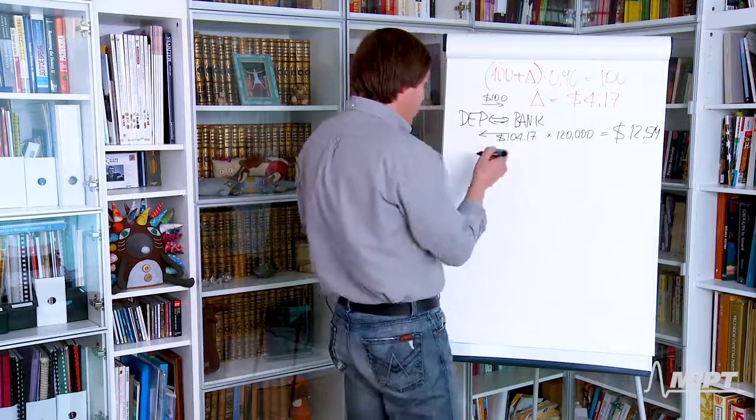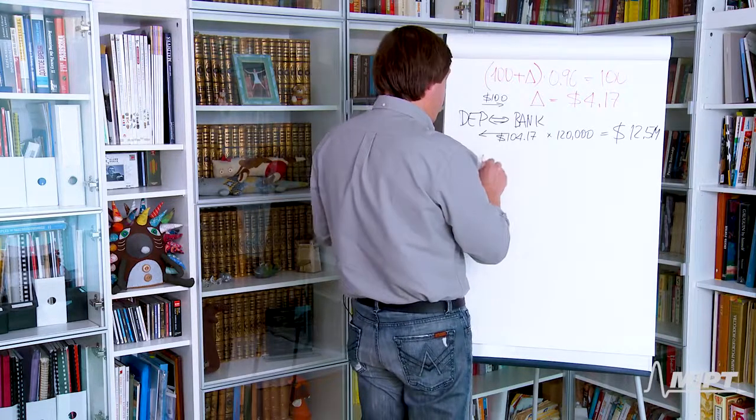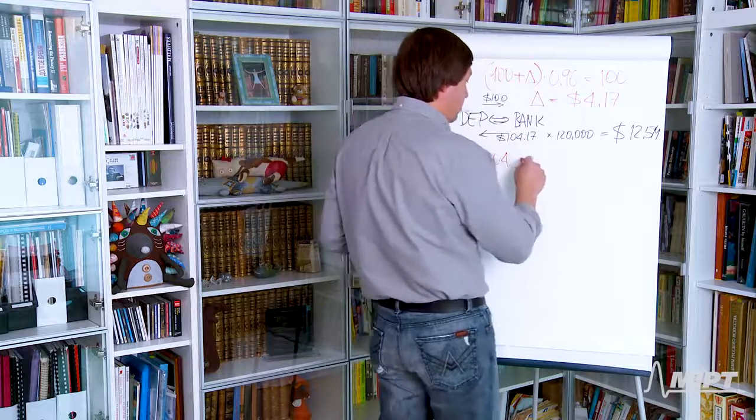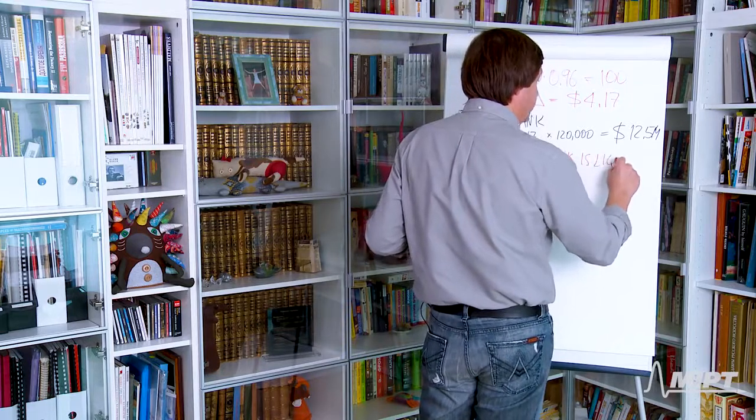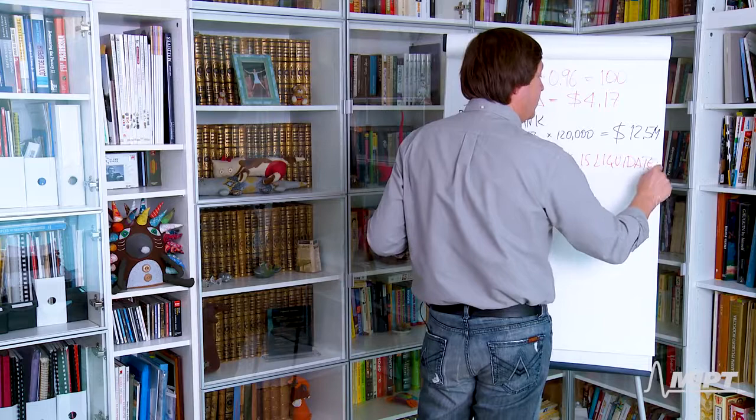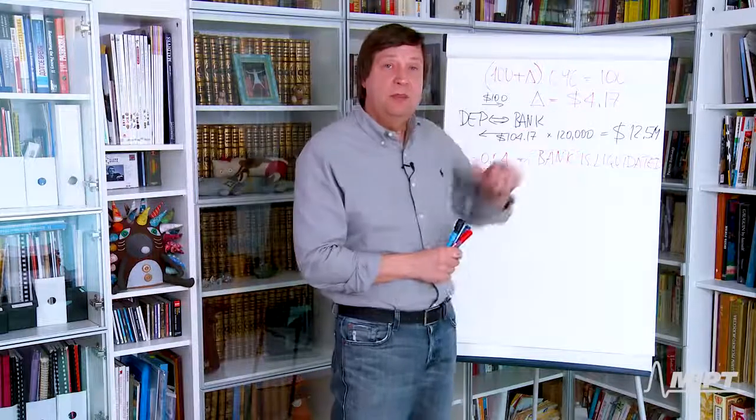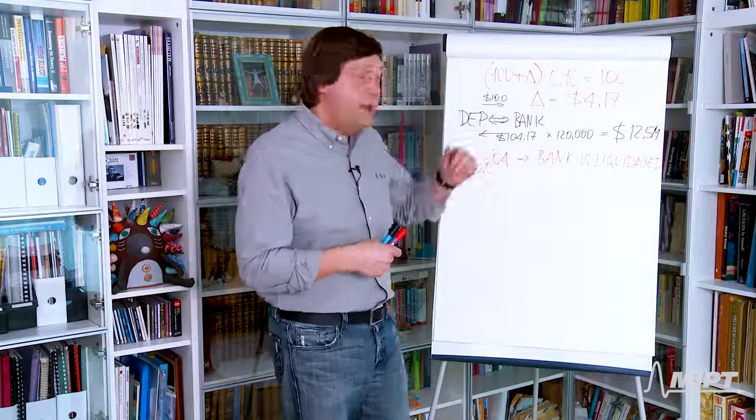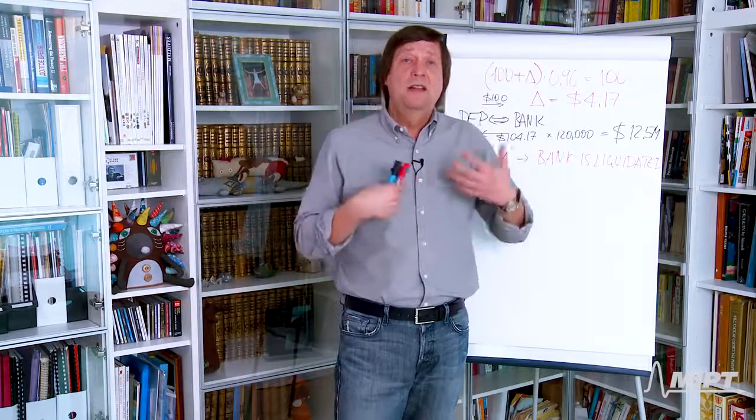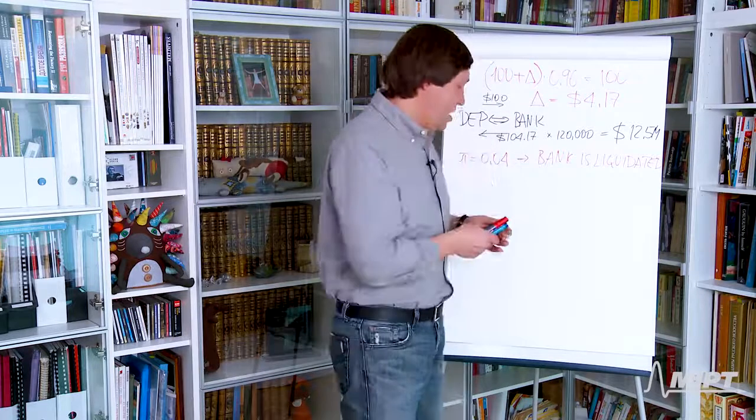So we have the following situation. With the pi of 0.04, what happens? The bank is liquidated. And no one gets anything. Too bad. Why is that? Because with this probability, the bank cannot make this payment. So the bank defaults on its obligation and because the structure of the contract between depositors and the bank is that contract liquidation, then depositors liquidate the bank. They go to the lawyers and then the bank goes bankrupt and all the money goes to the lawyers.